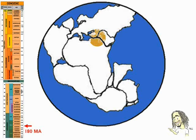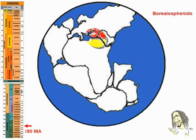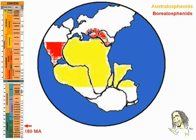In a few million years, the mammals diversified into two lineages: the one from the north and the one from the south. The northern ones are the Borealosfenites, marked in red, and the southern ones are the Australosfenites, marked in yellow, along with some fossil lineages that don't matter here. In a short time, they spread throughout the globe.